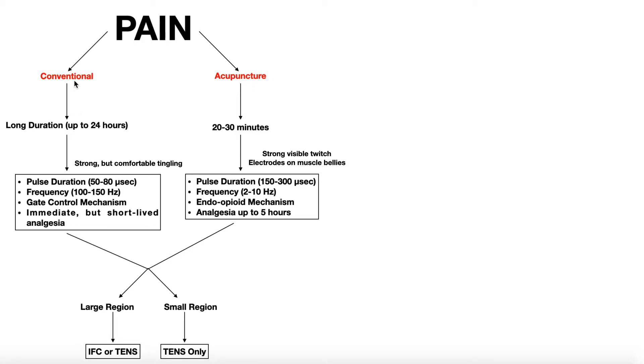It has to do with the amount of pain relief that you get after the treatment is over. I can use the conventional setting of TENS or IFC up to 24 hours, but that pain relief or analgesia is only going to be present while the machine is being used. As soon as you turn off the machine, the pain relief is going to stop. It's immediate, but it's short-lived. Acupuncture is a more intense treatment, so you're not going to really have pain relief while it's being used. However, after those 20 to 30 minutes, you can have pain relief up to five hours after the treatment.